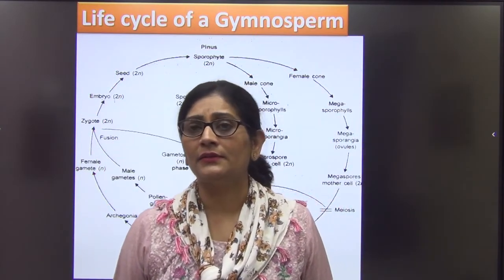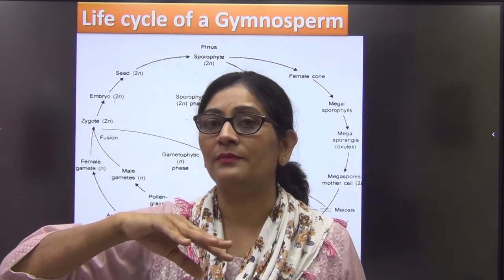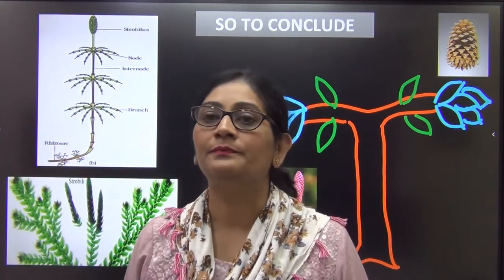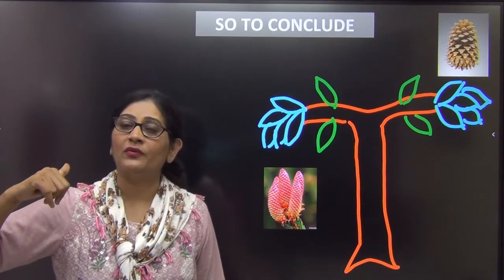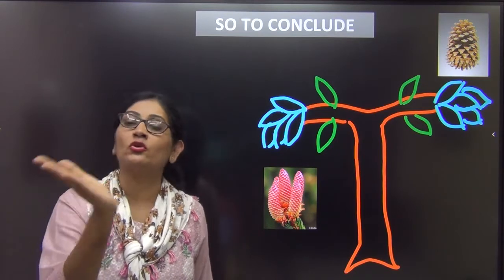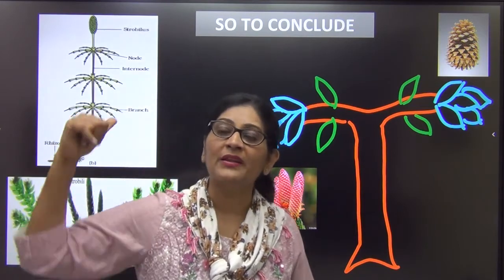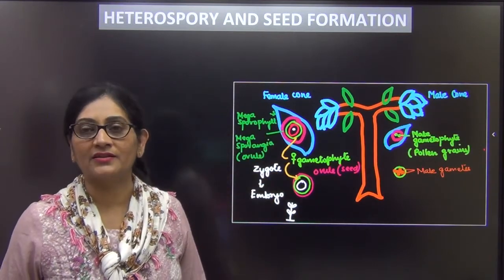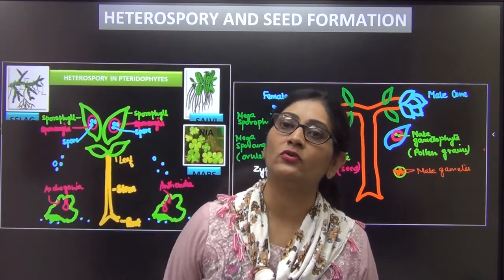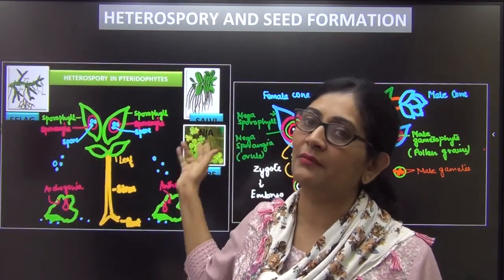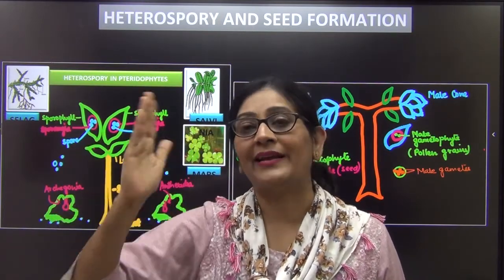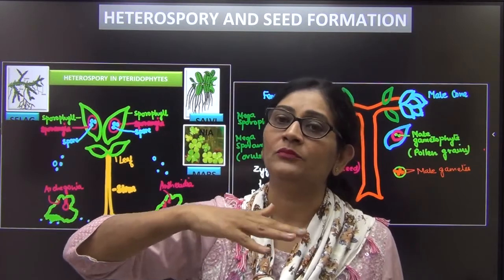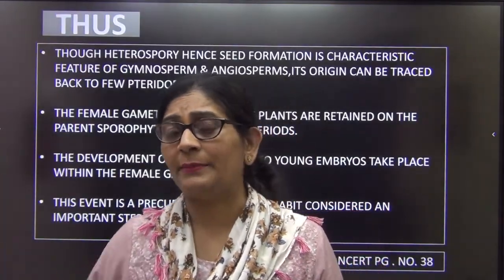We have studied two structures which are basically unique to gymnosperms. One is the formation of cones — cones are found only in gymnosperms, but some pteridophytes also bear cones. Another is heterospory, which is characteristic from gymnosperms onward, but some pteridophytes like Selaginella, Salvinia, and Marsilia also show heterospory. These two characters, found typically in gymnosperms but also in some pteridophytes, show that evolution has taken place and that gymnosperms have been derived from pteridophytes.